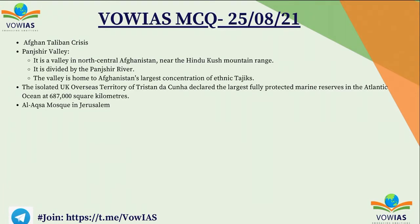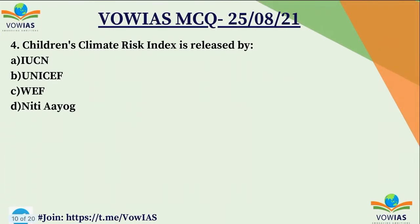From the examination point of view, with the Afghan Taliban crisis ongoing, we must remember all important places surrounding Afghanistan — important rivers and neighboring countries. The Panjshir Valley is in north-central Afghanistan near the Hindu Kush mountain region, divided by the Panjshir River, and is home to the ethnic Tajik tribes. Tristan da Cunha is the largest isolated UK overseas territory in the Atlantic Ocean — a fully protected marine reserve of about 687,000 square kilometers. The Al-Aqsa Mosque is in Jerusalem, which is a famous place for both Christians and Muslims.